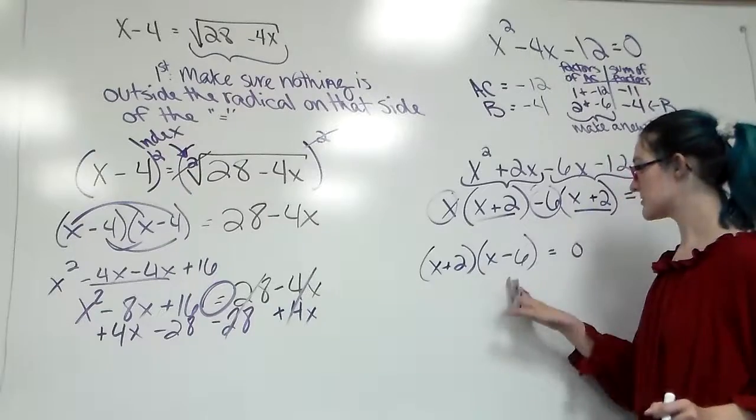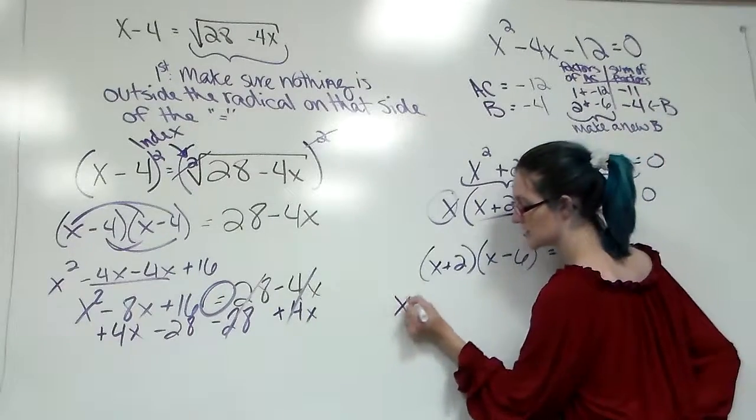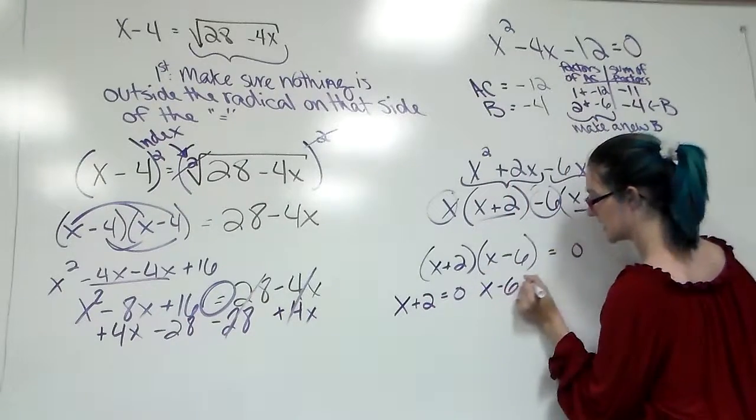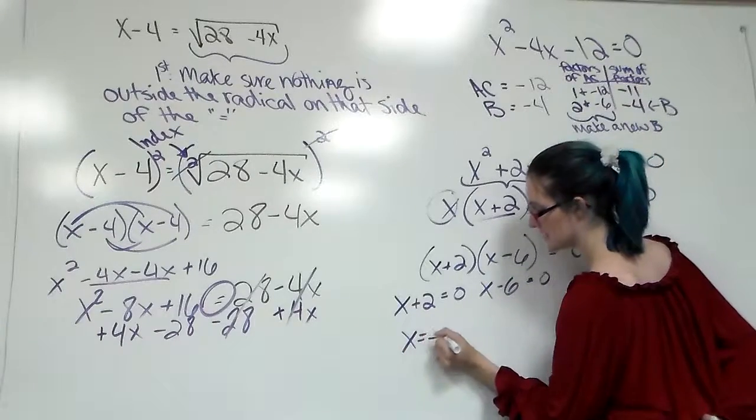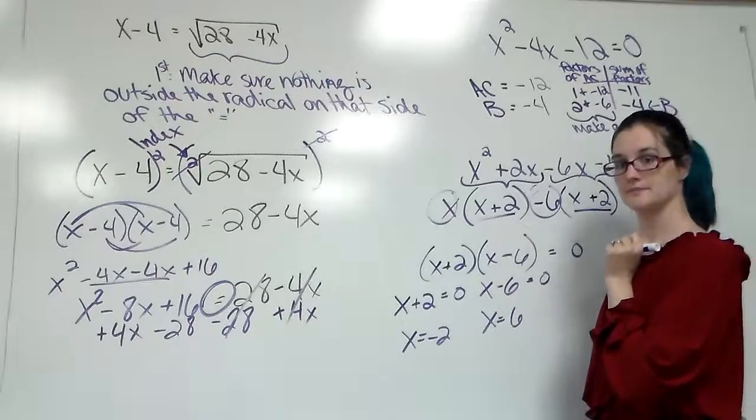Zero factor property. We have two things multiplied together to equal 0. One or both of them must equal 0. x plus 2 is 0. x minus 6 is 0. Solve. x equals a negative 2. x equals a positive 6.